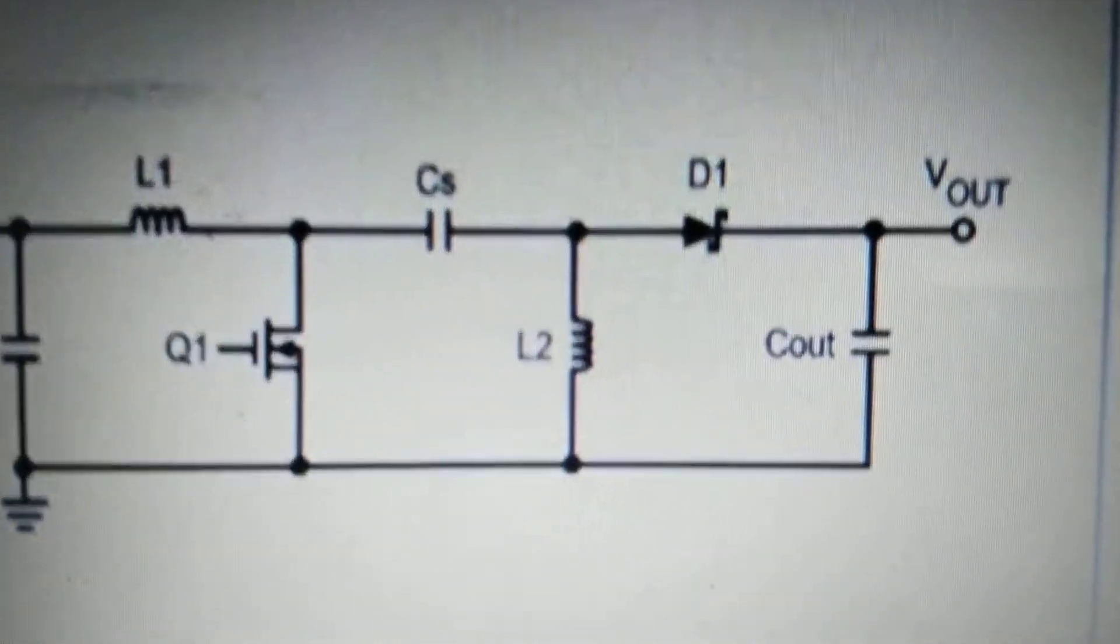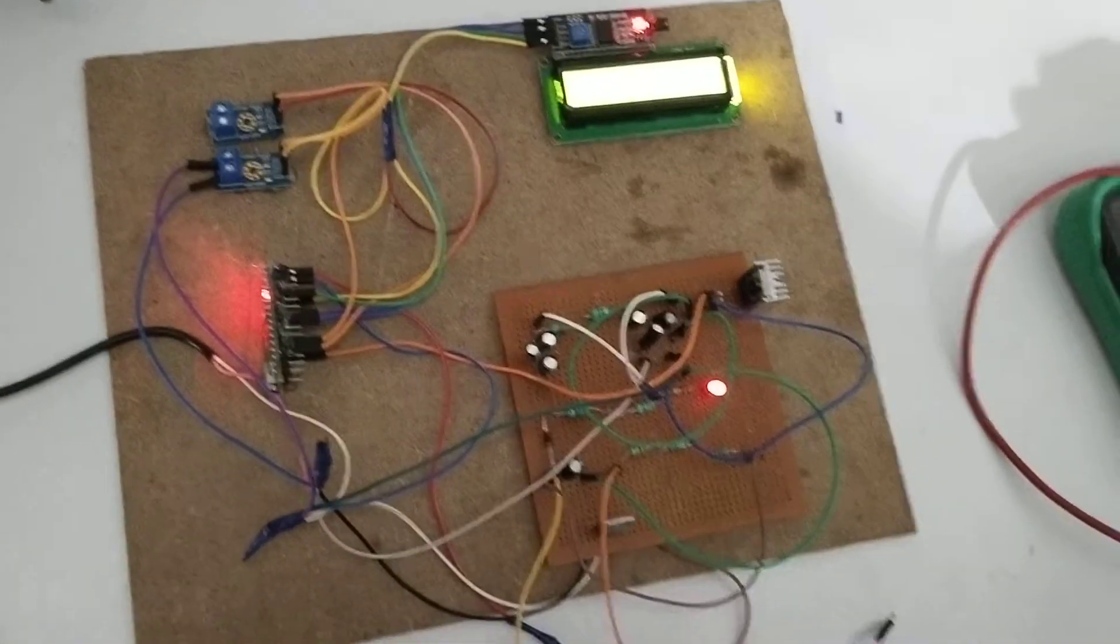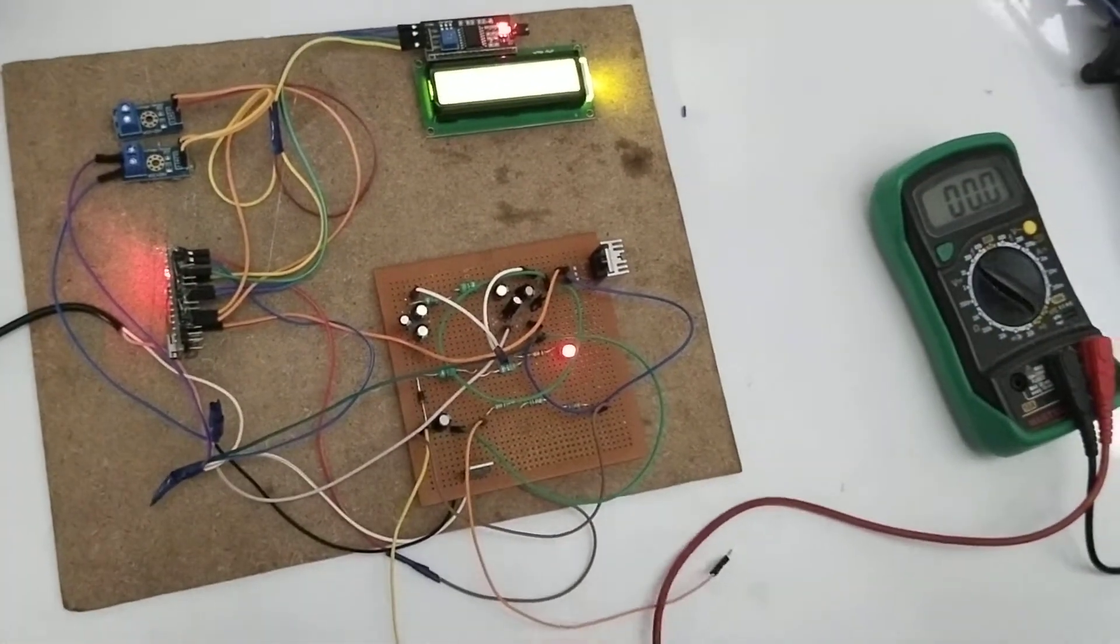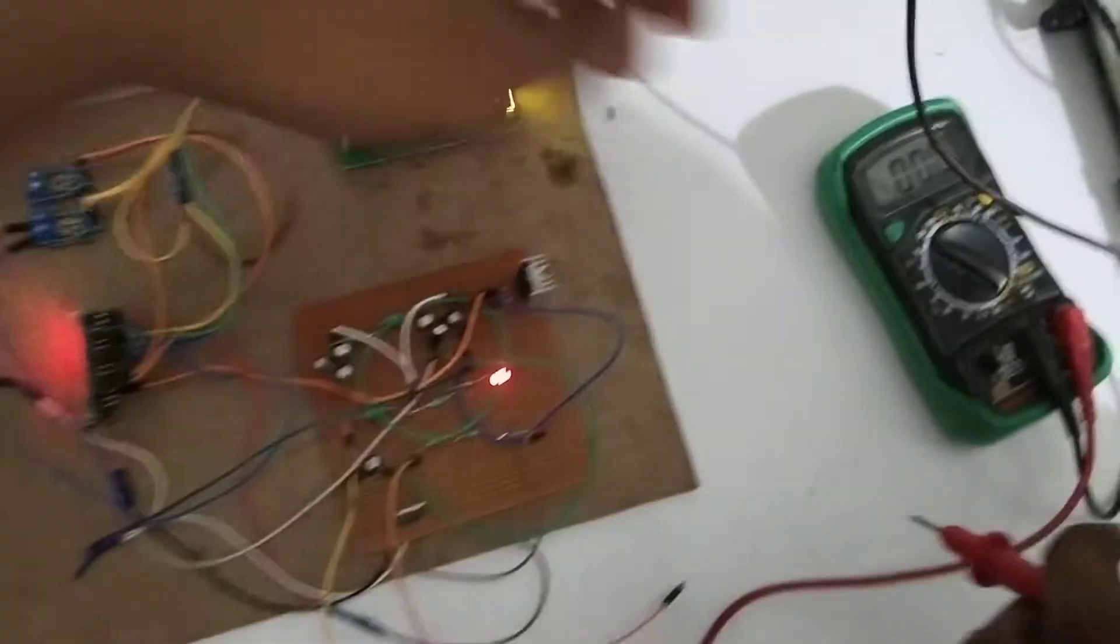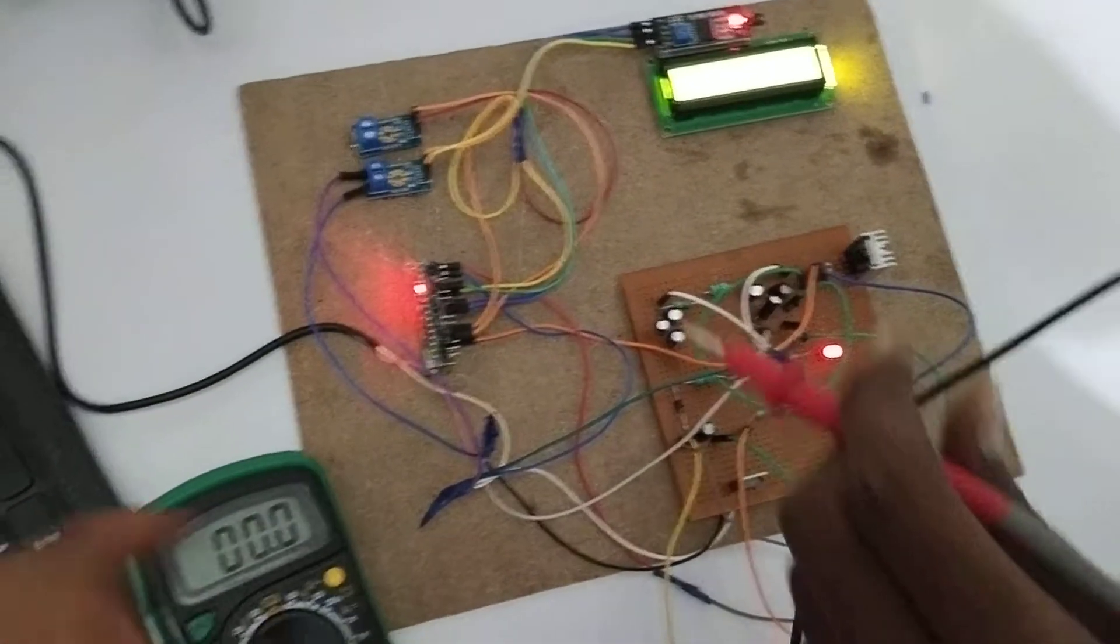Now we're going to check the input and output voltage of the circuit. I'll check the input voltage now. It's difficult to see the voltage on the LCD display, so I'm displaying it on the multimeter.